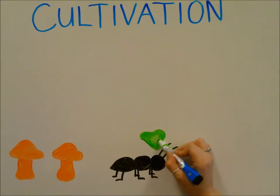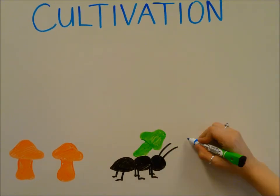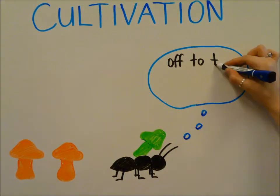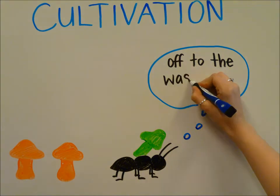Ants and farmers are both very particular about which plants suit their needs. If the wrong kind of plant is growing, it will be removed.